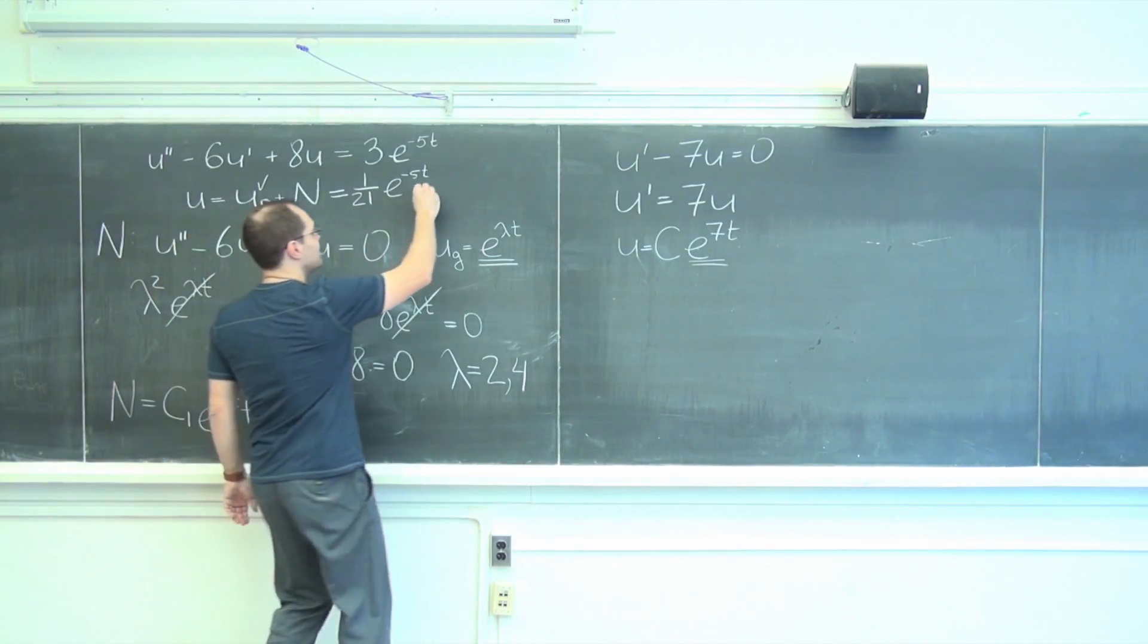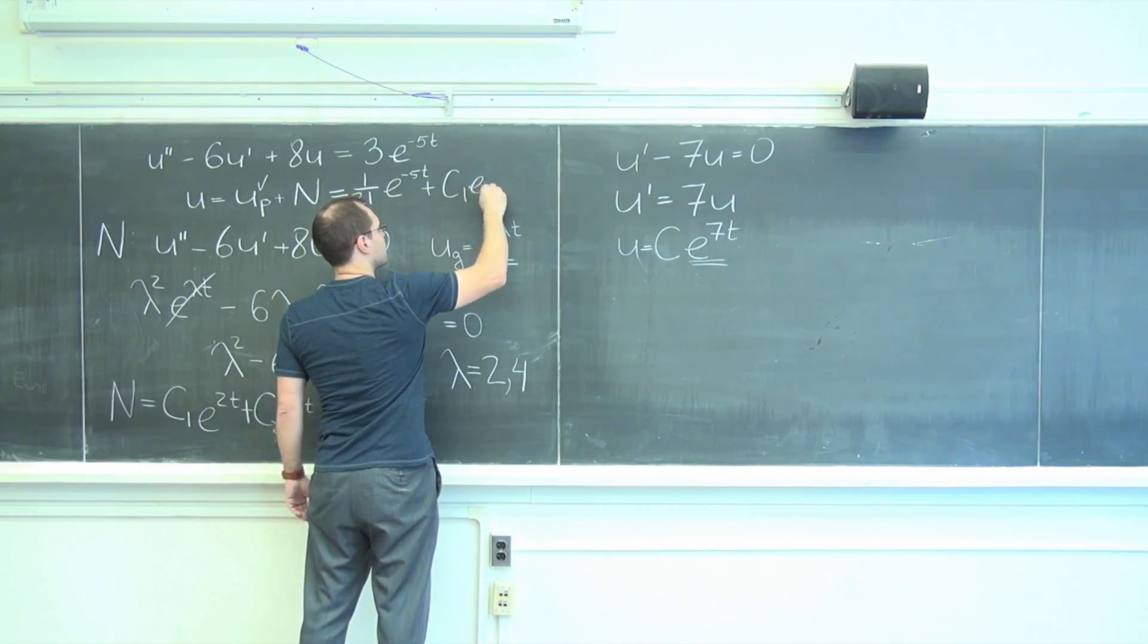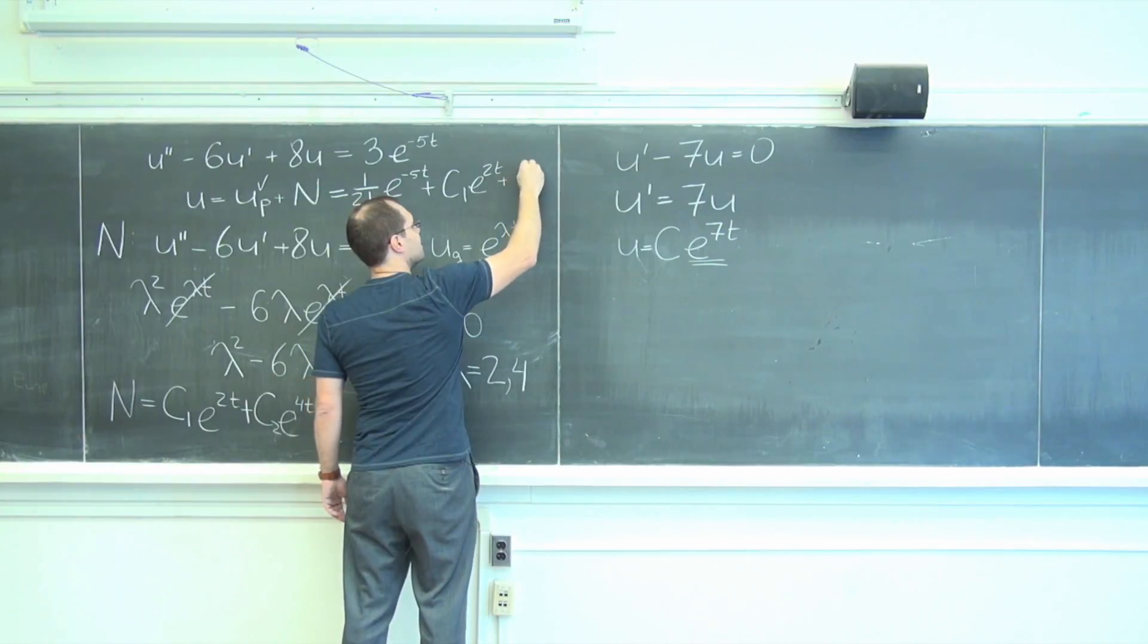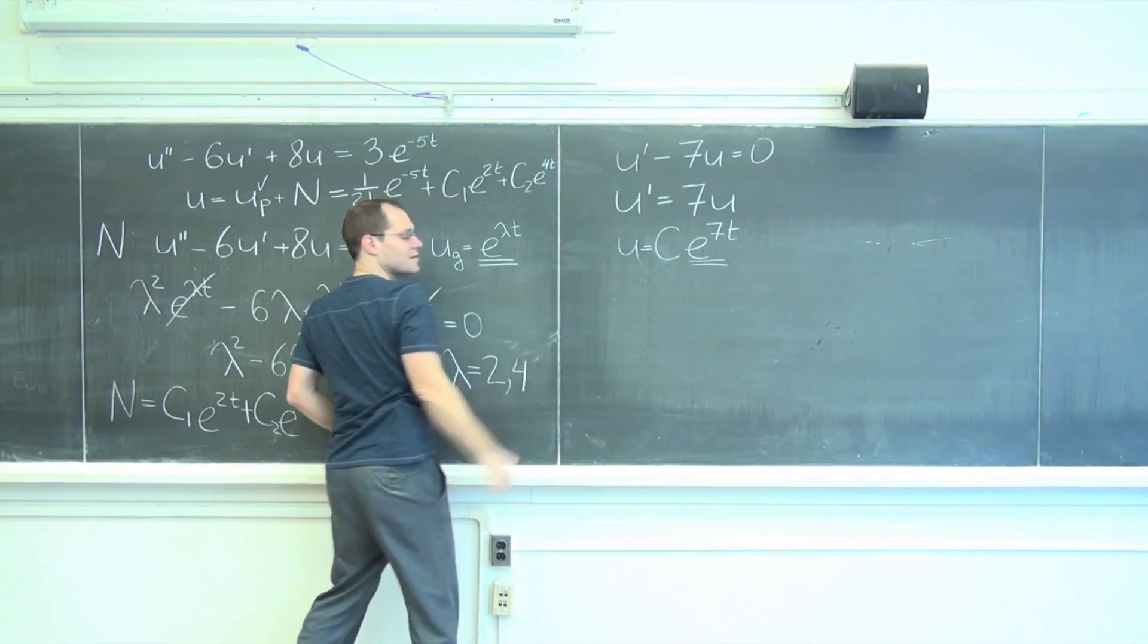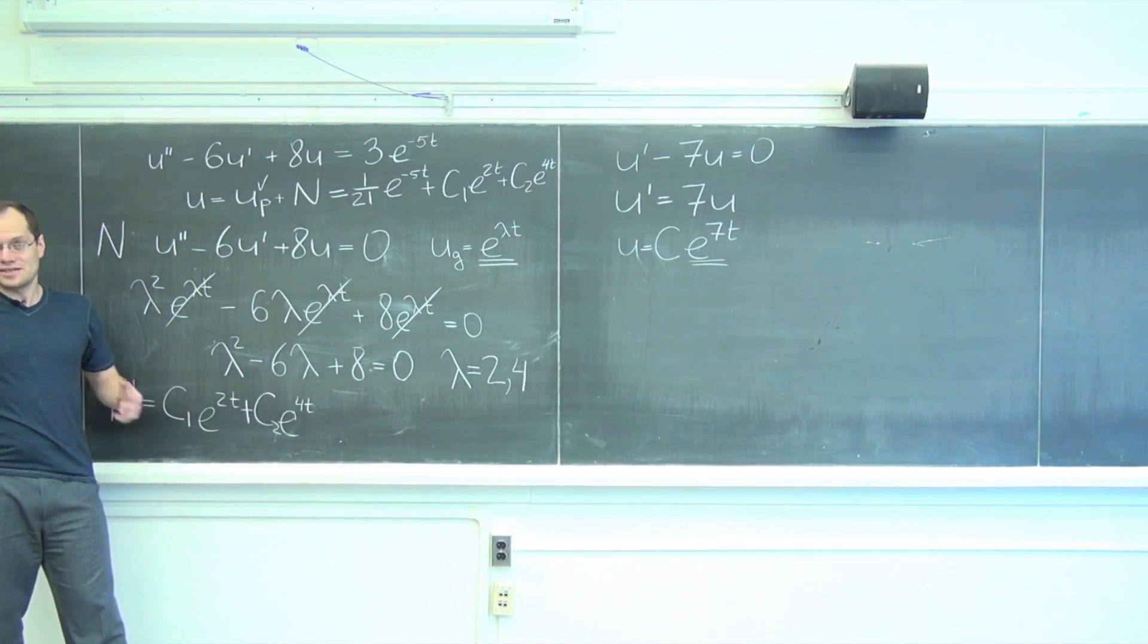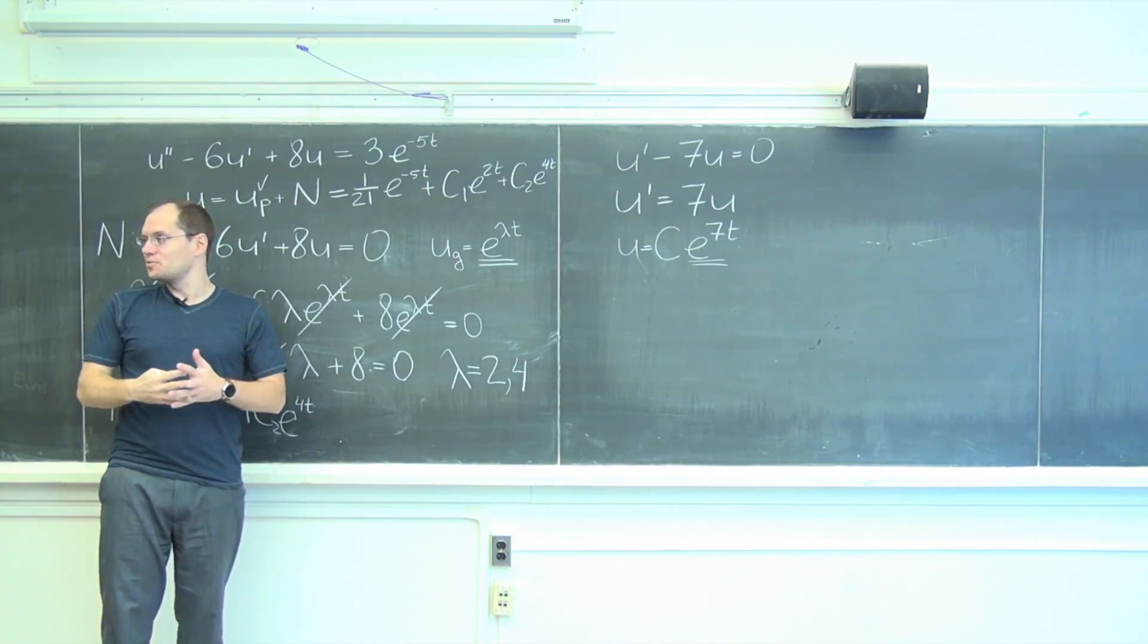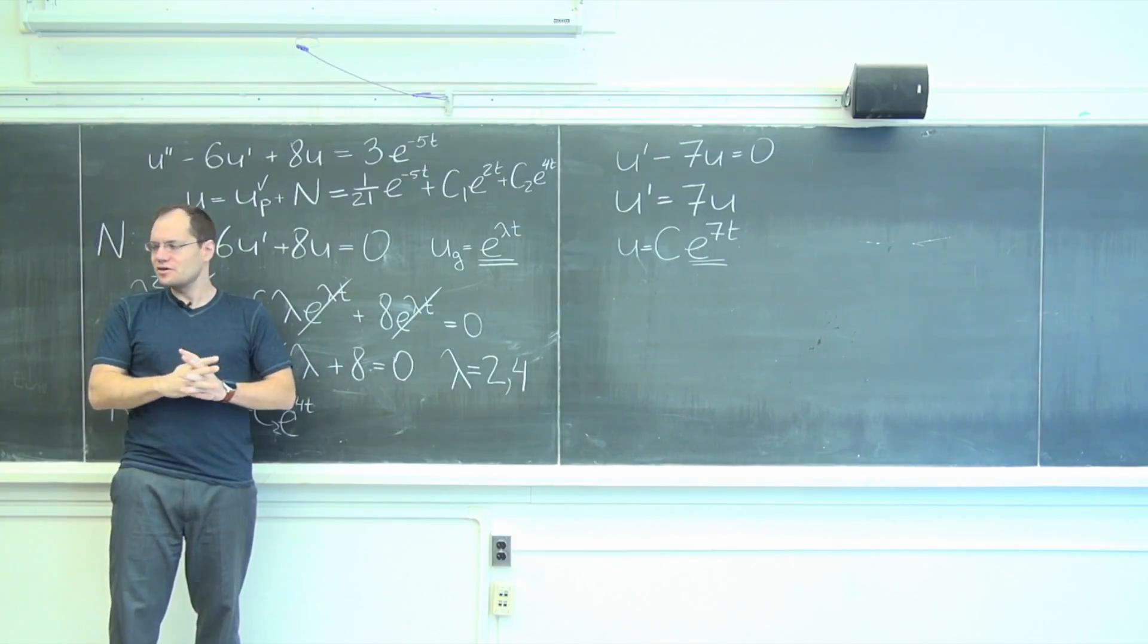And so we can now write down the general solution to the system: c1 e to the 2t plus c2 e to the 4t. And this is very satisfying, I think, because everything worked out as a student of linear algebra would expect, which we all are, right? Just the right numbers.